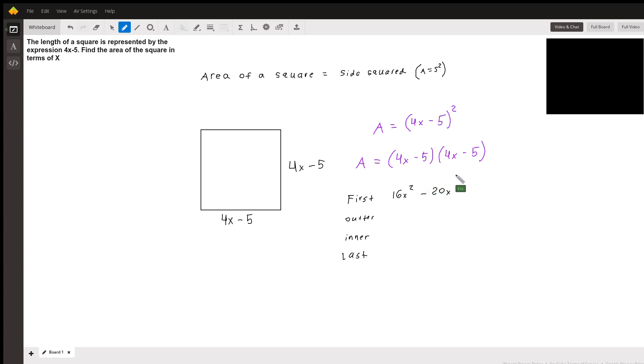The product of the inner terms, negative 5 times 4x is also negative 20x. And the product of the last terms, negative 5 times negative 5, negative times a negative is a positive, so our result is going to be positive 25.